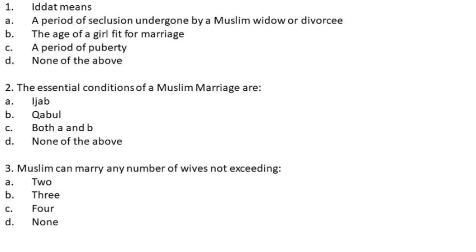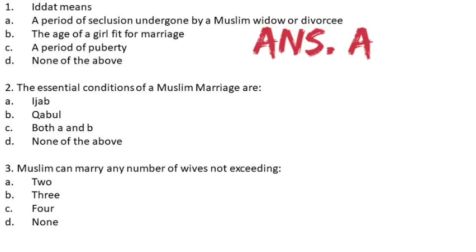Question 1: Iddat means — (A) a period of seclusion undergone by a Muslim widow or divorcee, (B) the age of a girl fit for marriage, (C) a period of puberty, (D) none of the above. The answer is A: a period of seclusion undergone by a Muslim widow or divorcee.